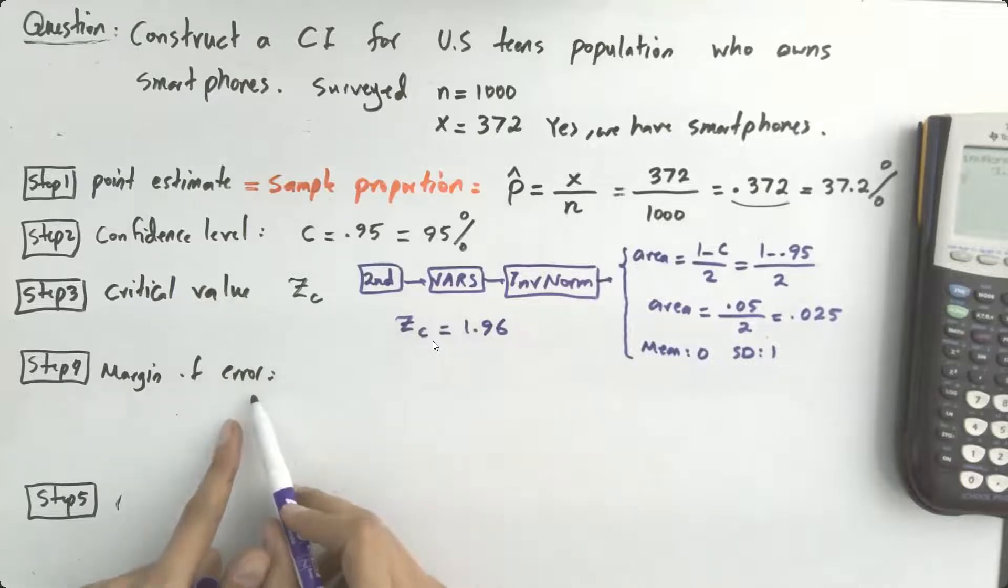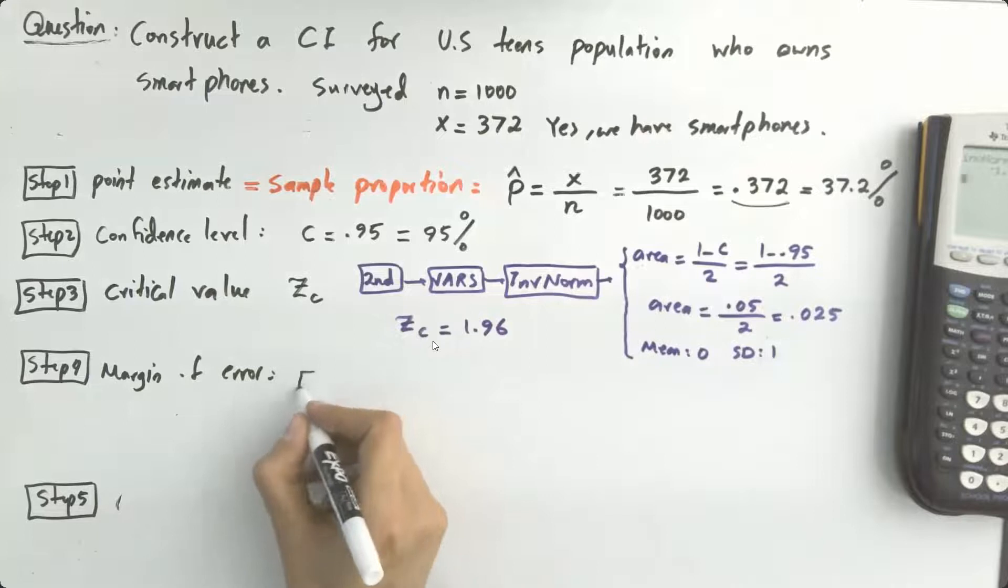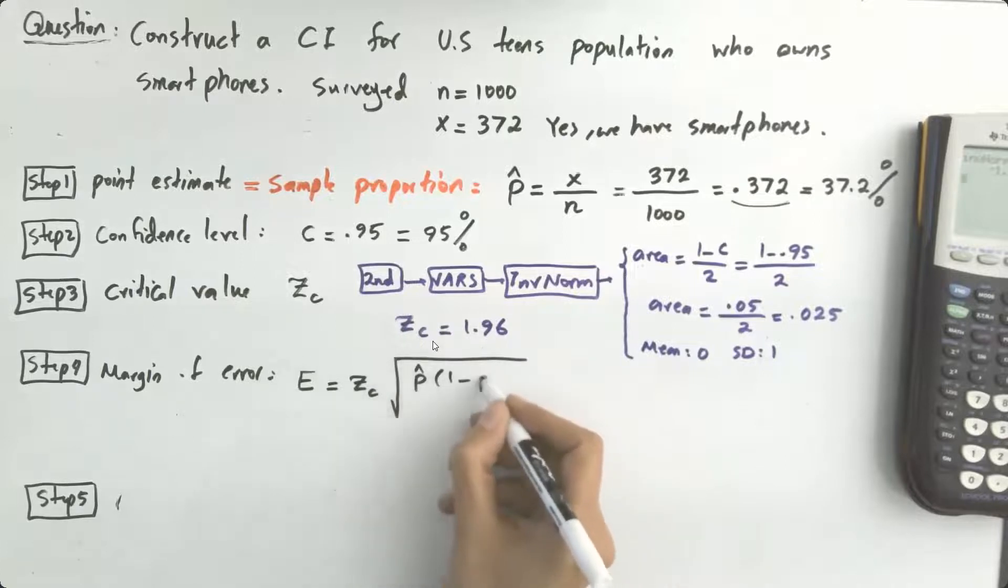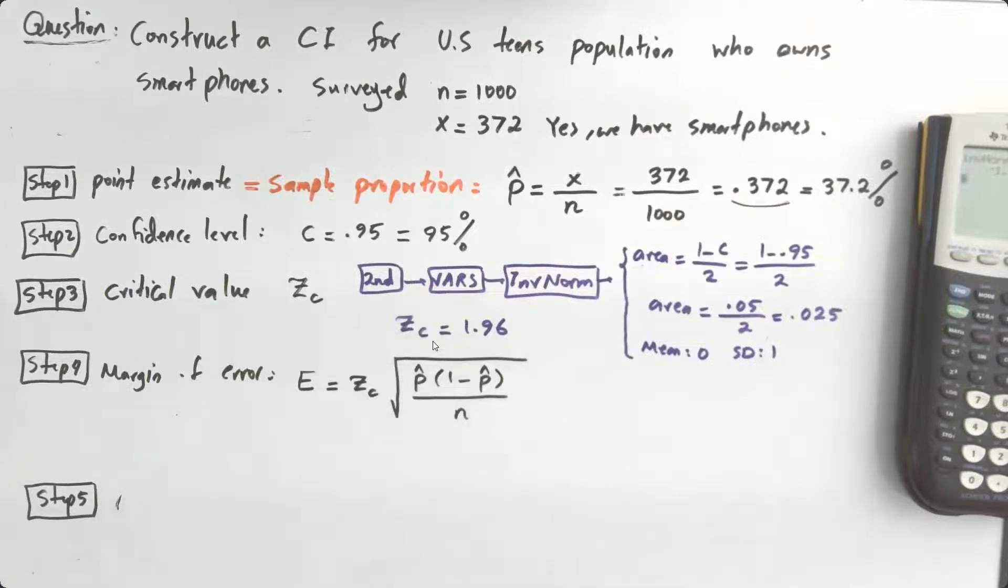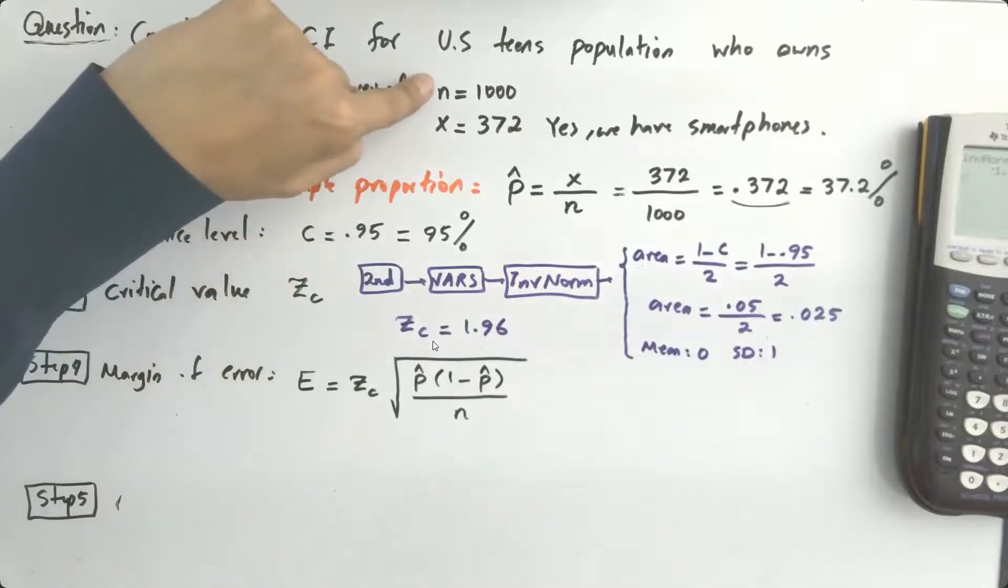step four to find the margin of error. Margin of error for the population proportion has a different formula. E is equal to z_c times the square root of p hat times 1 minus p hat over n.